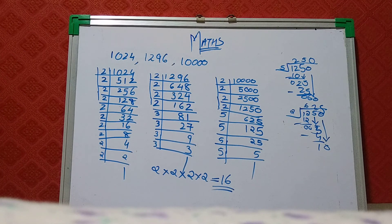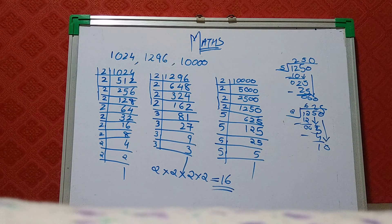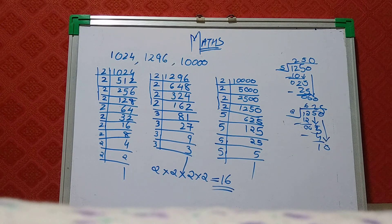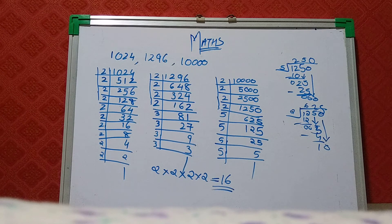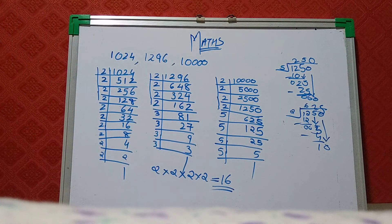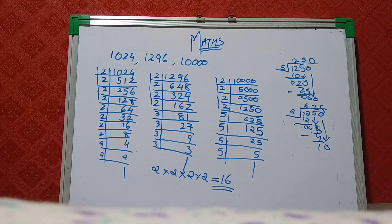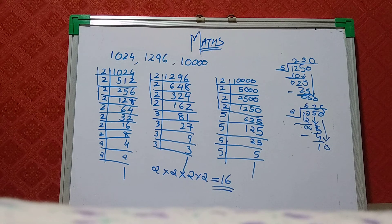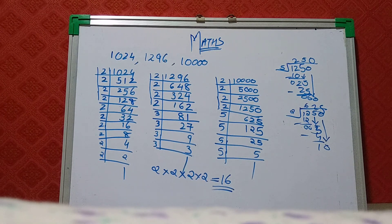So HCF of 1024, 1296 and 10,000 would be 16. That's it students, this is finding HCF by prime factorization method. The next topic is finding HCF by division method, that is Euclid's algorithm. We will do it in another lecture. Thank you students, take care everyone, bye.